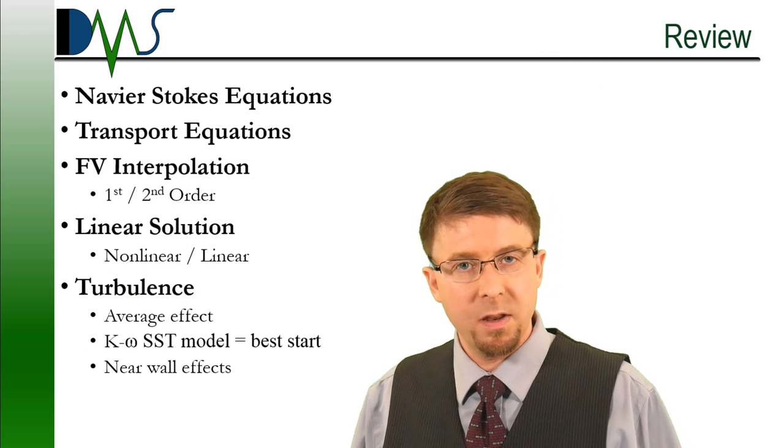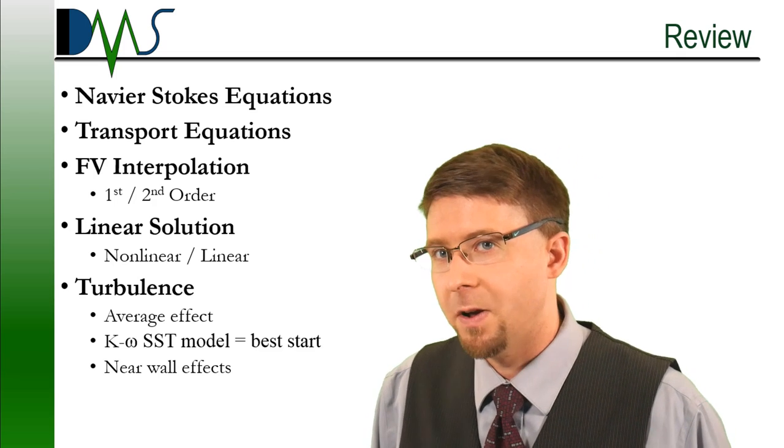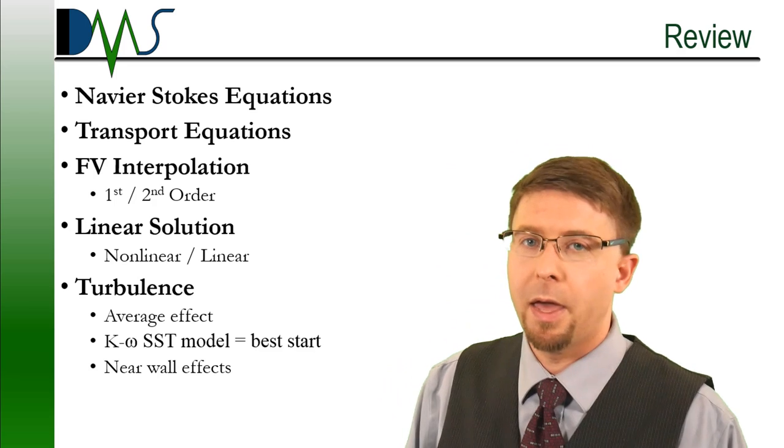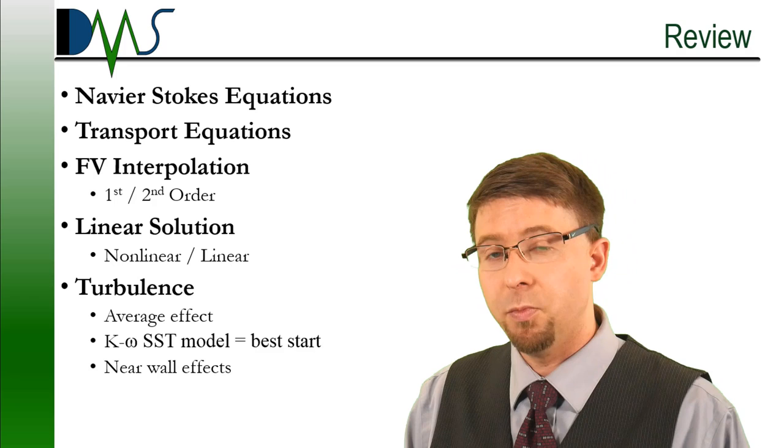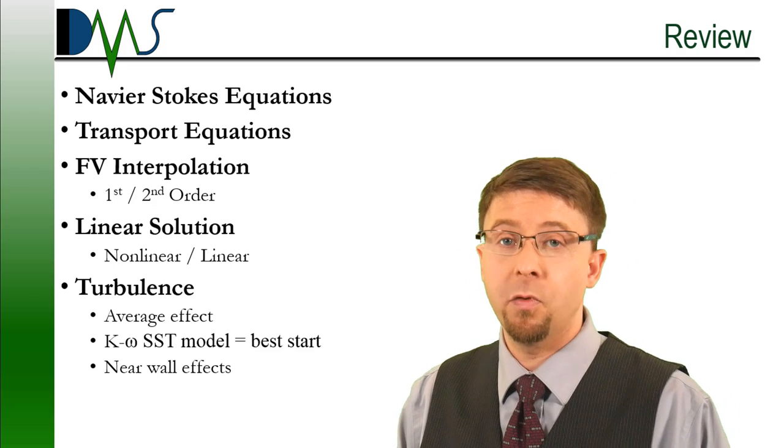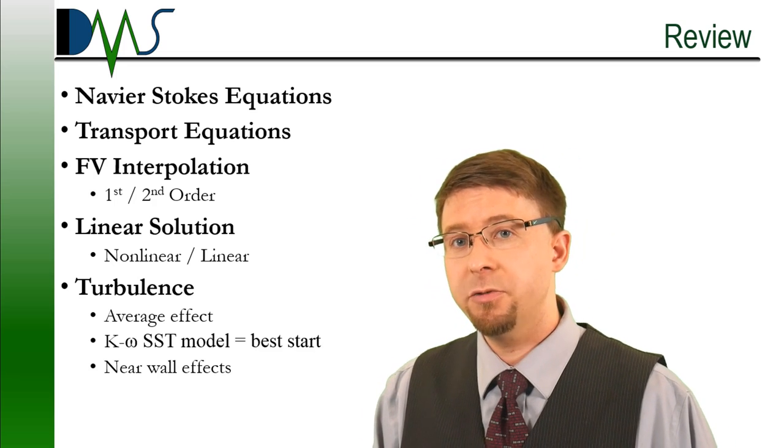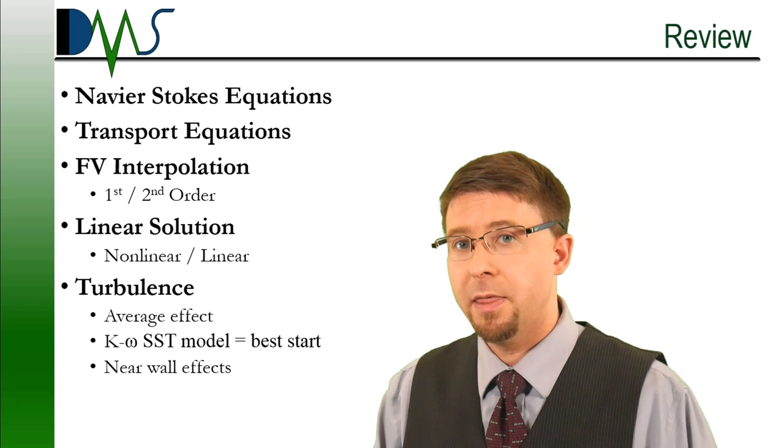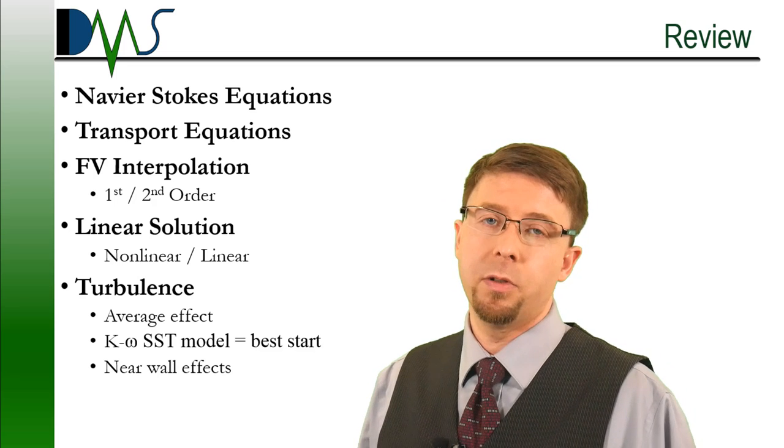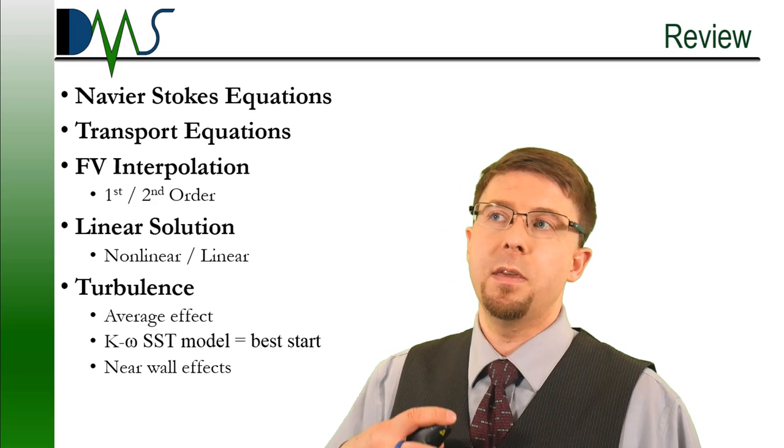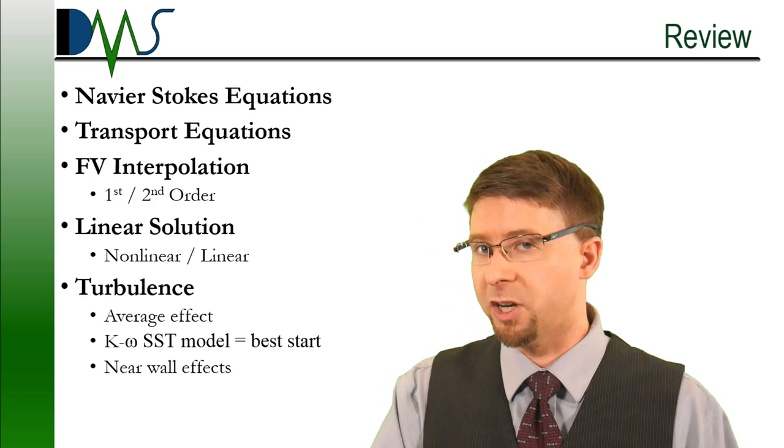And that covers turbulence and near wall effects. So to review, we've gone over Navier-Stokes equations, transport equations, finite volume interpolation, linear solution, and pretty well covered turbulence now. We've realized that turbulence, we're doing an averaging effect. That's what RAND stands for. Reynolds averaged Navier-Stokes. We know that the K-Omega shear stress transport model, K-Omega SST, that's probably the best model to start with for turbulence models. And we have now understood the near wall effects. How the pick between a wall function and a wall damping function really depends on what our meshing strategy is.